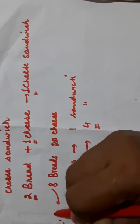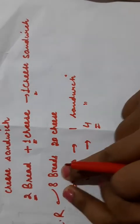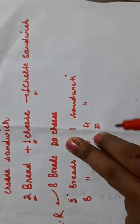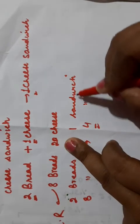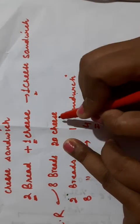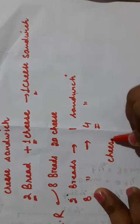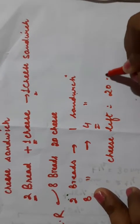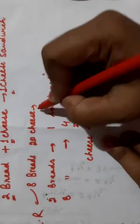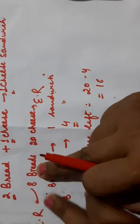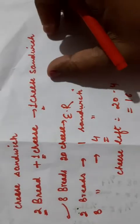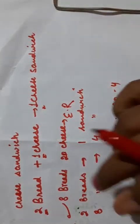Which of the ingredients will be completely consumed when making four sandwiches? Of course, bread. So bread is the limiting reagent here because it is completely consumed. When eight breads are used to make four sandwiches, it will be completely consumed. But the cheese will be left behind. For preparing four sandwiches, you will use only four cheese, so cheese left behind will be twenty minus four, that is sixteen cheese will be left behind.